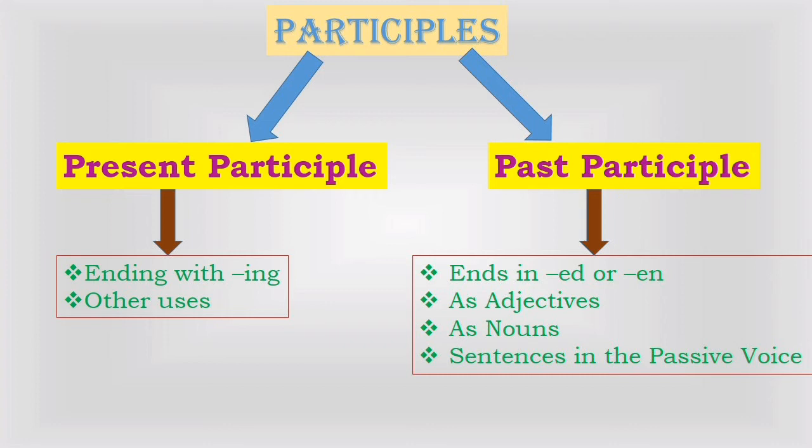The present participle can link actions that occur at the same time, or where one action occurs immediately after the other. For example: 'He walked to the door, then he opened it' can be written as 'Walking to the door, he opened it.' If two actions do not happen simultaneously or in succession, we can join sentences with a past participle. For example: 'The examiner corrected all the question papers, he returned them to the students' becomes 'Having corrected all the question papers, the examiner returned them to the students.'